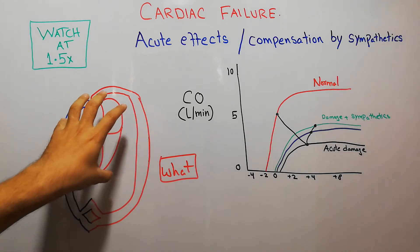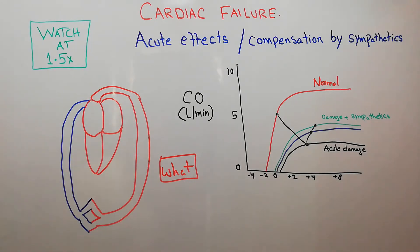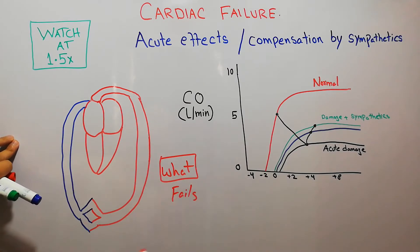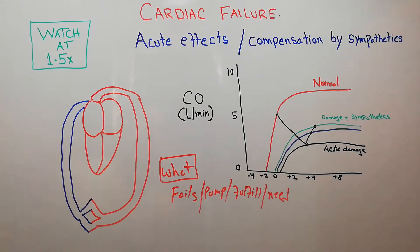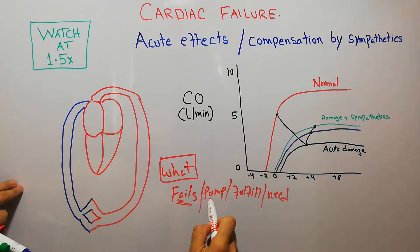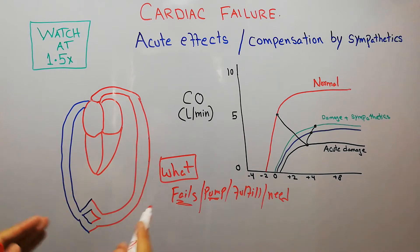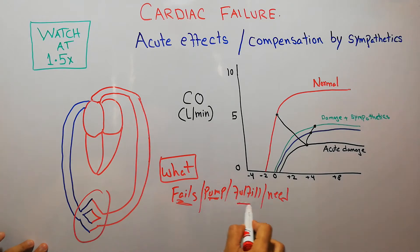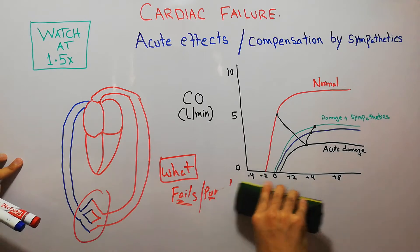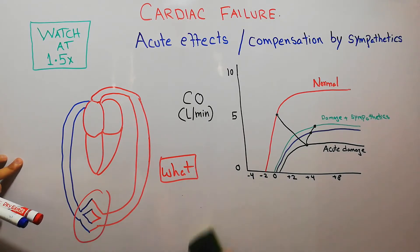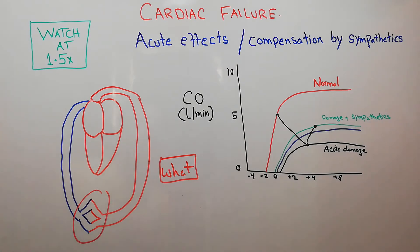If the heart fails to pump sufficient blood to satisfy the needs of the peripheral tissues, we say that cardiac failure has occurred — the heart has failed to fulfill the needs of the peripheral tissue or the human body. Now, what are the basic causes of heart failure?